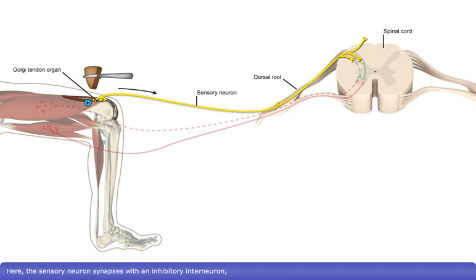Here, the sensory neuron synapses with an inhibitory interneuron, which, in turn, synapses ipsilaterally with a motor neuron in the anterior gray horn of the spinal cord.